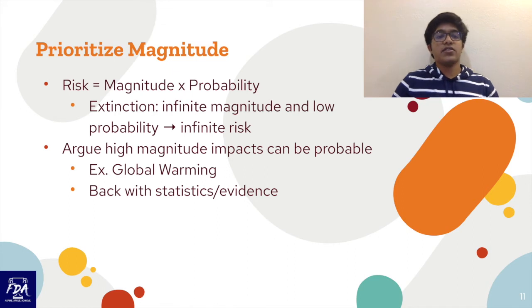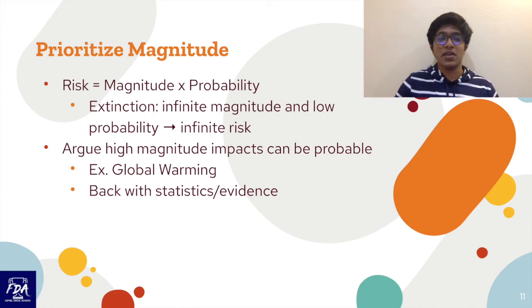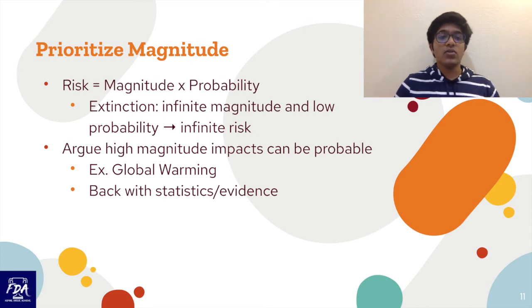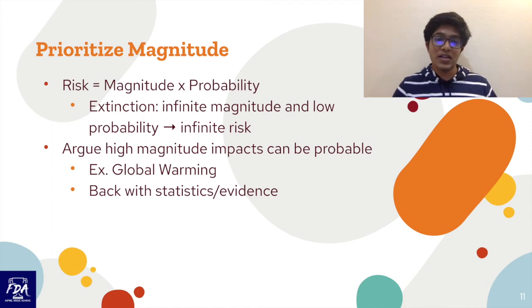For prioritizing magnitude, consider what risk means: risk equals magnitude times probability. Extinction has an infinite magnitude and a low probability, but infinity times any small decimal is still infinity, so the risk is infinite. If there's a 1% chance that 10 million people are going to die, you'll do everything you can to stop it because the risk is so huge. You can argue high-magnitude impacts can also be probable — with global warming there's a lot of statistics and evidence showing this high-magnitude impact will happen if we don't act. The same applies to nuclear war: bring statistics and evidence to convince the judge there's a good chance it will happen.